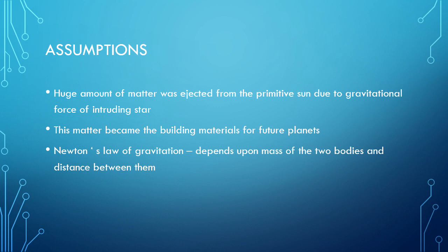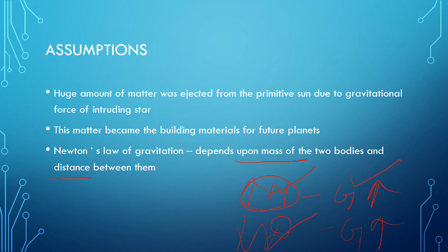Newton's law of gravitation depends upon the mass of the two bodies and the distance between them. If the mass is high, the gravitational impact is also high. If the distance is less, the gravitational impact is also high. The intruding star had greater mass, so its gravitational impact was more, and since it was coming close to the primitive sun, the distance was less and the gravitational force impact was very strong.